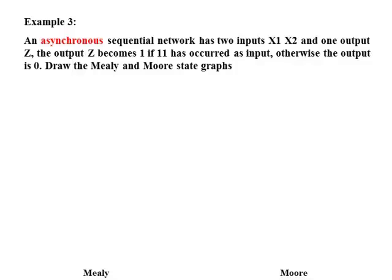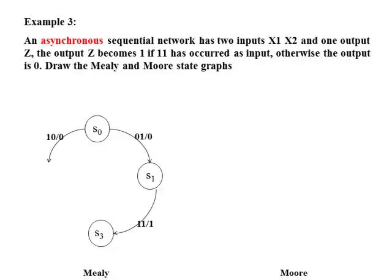Now we solve this example. When the network receives an input of 0, 1, the output is 0 and it goes to another state S1. Now the input is 1, 1 and the output is 1, because 1, 1 has occurred as input. When the network receives 1, 0, it goes to another state S2. And when it receives 1, 1, the output is 1.